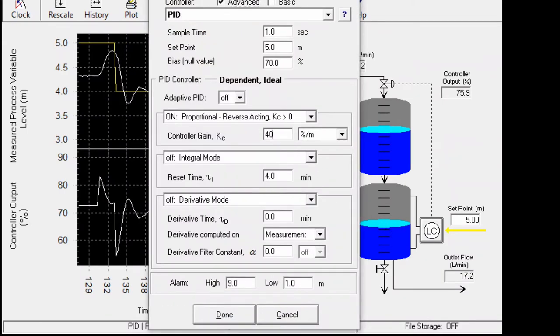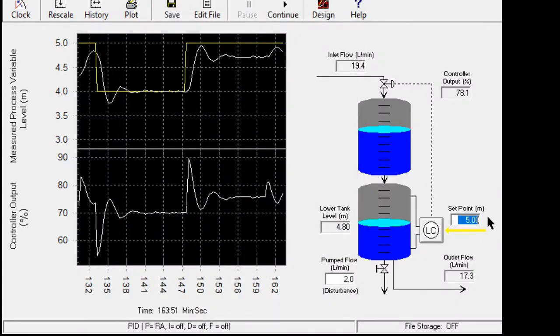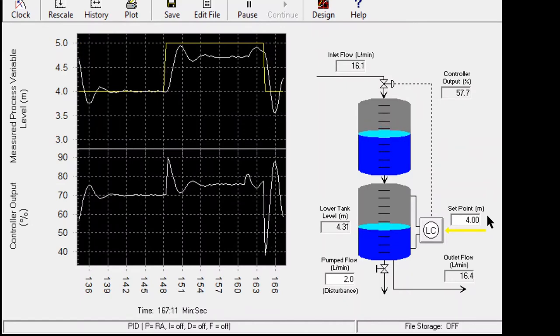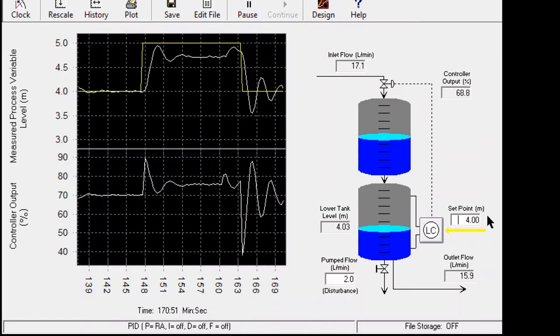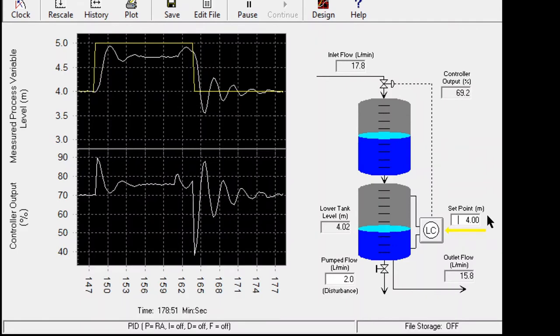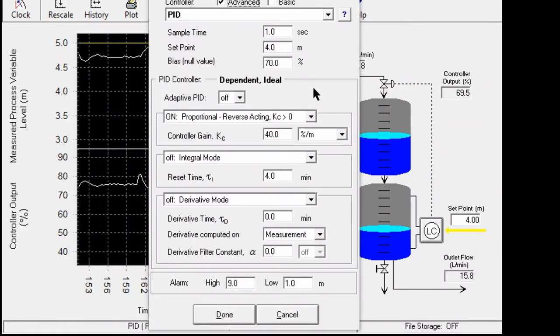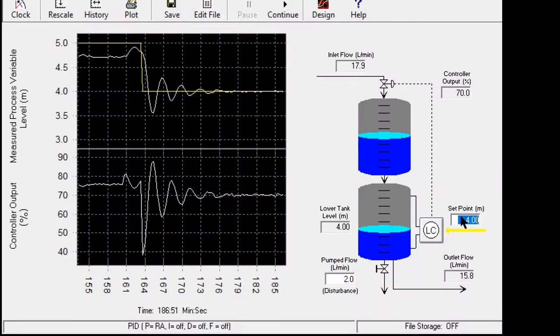Now if I make the gain even more, the response becomes more oscillatory. However, it comes back to the steady value. So now keep on increasing in this way. Let's see when it becomes marginally stable, meaning what is the ultimate gain for this case.